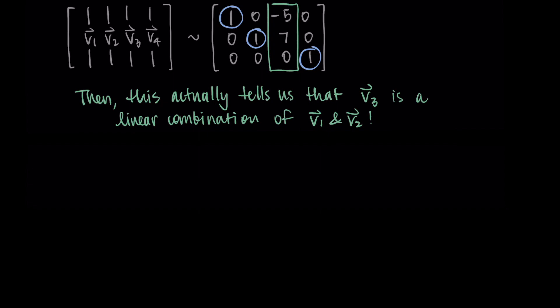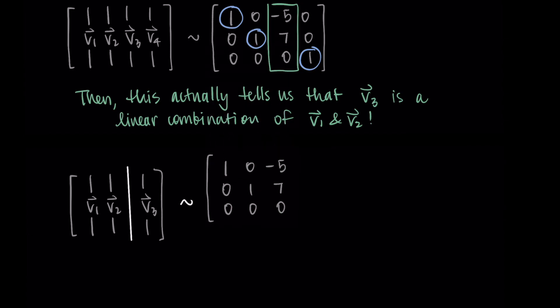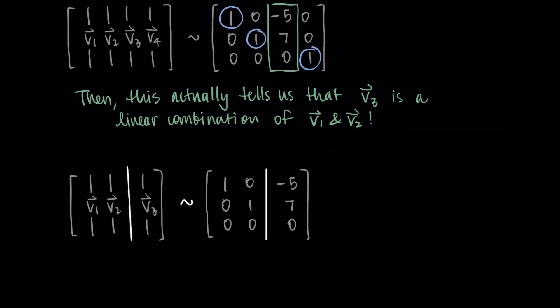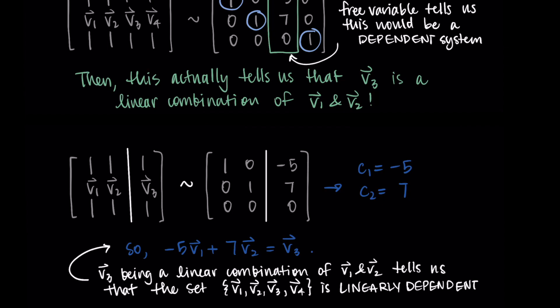If we look at just the first three vectors and augment it so that the third vector is in the b position on the right-hand side, the row reduced matrix shows that c1 equals -5 and c2 equals 7. This means we can write the third vector as a linear combination of the first two with weights -5 and 7: negative 5 times v1 plus 7 times v2 equals v3. So the free variable column in that first matrix tells us this is a dependent system, and v3 being a linear combination of v1 and v2 tells us the set of all four vectors is linearly dependent.